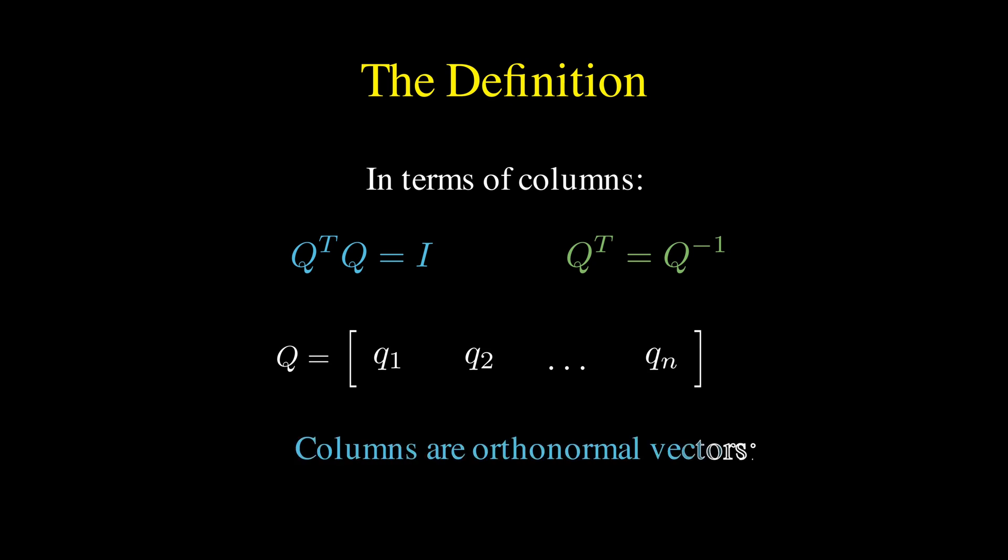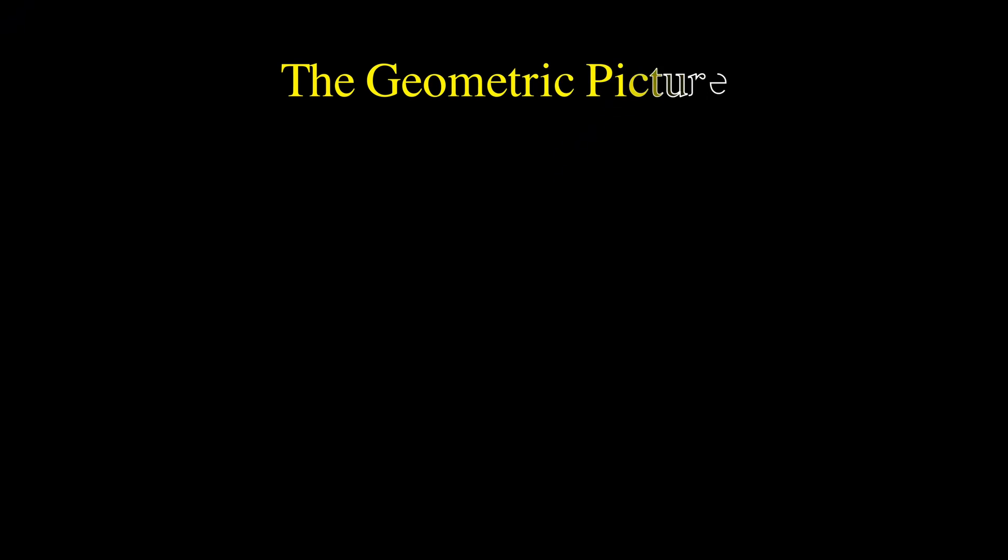Specifically, the columns must be orthonormal vectors. To visualize this, let's consider two unit vectors that are perpendicular to each other. Say, Q1 pointing to the right and Q2 pointing up.